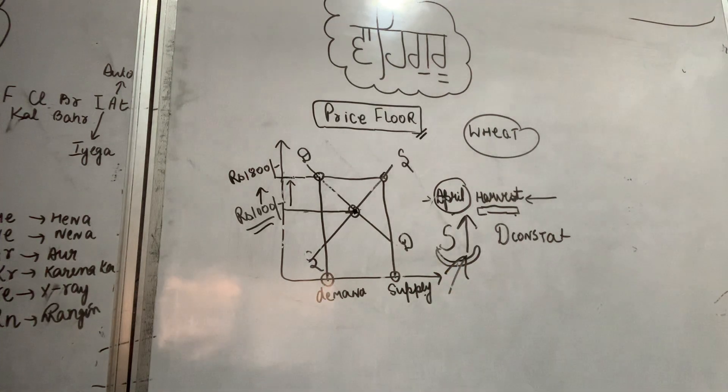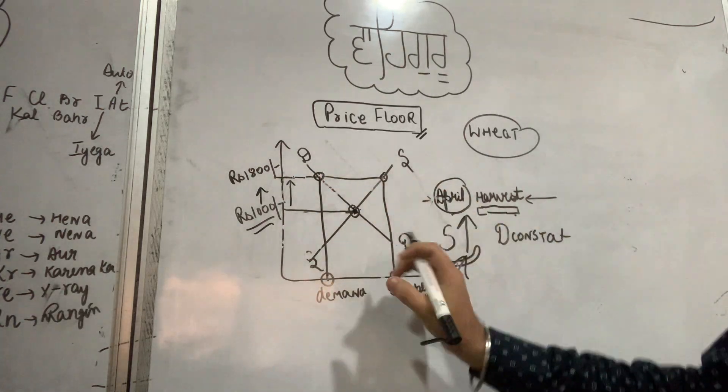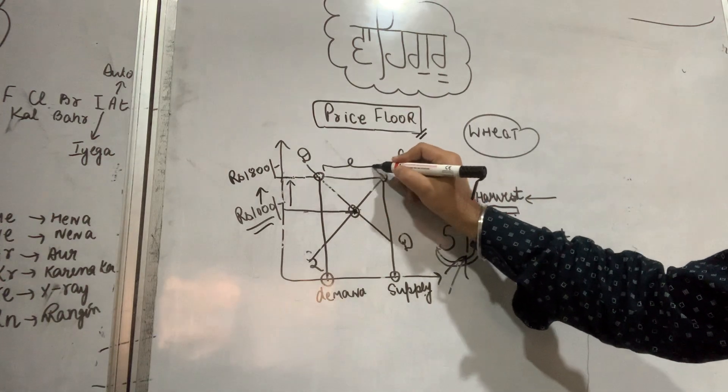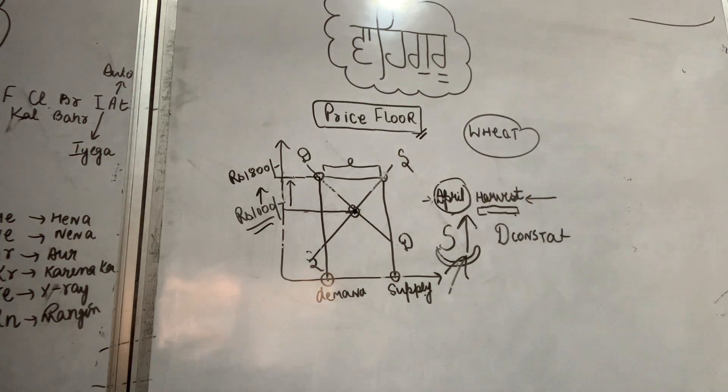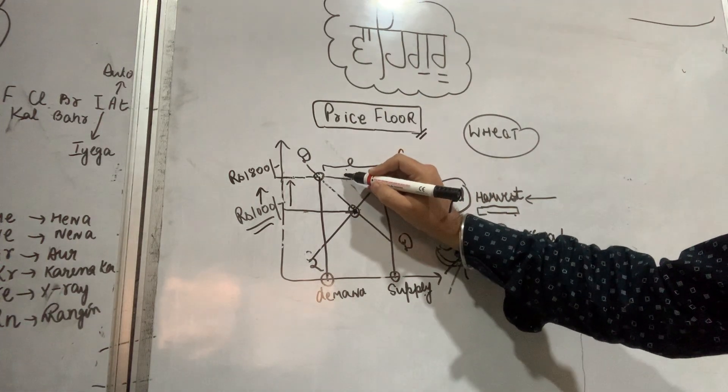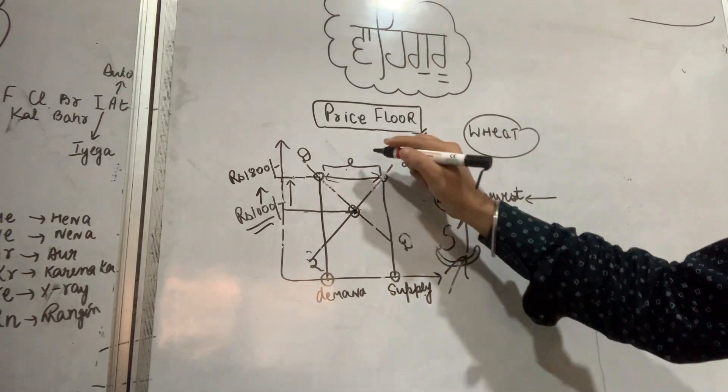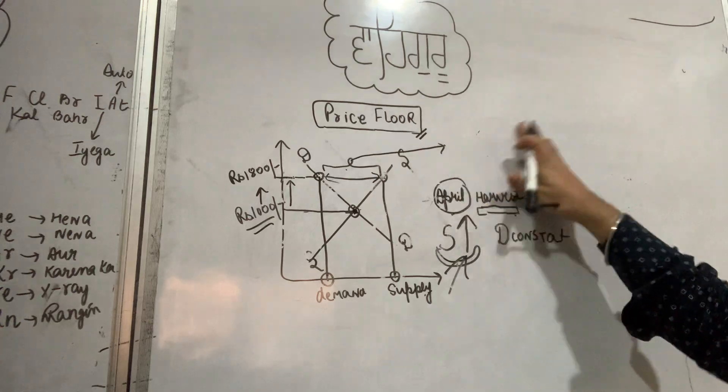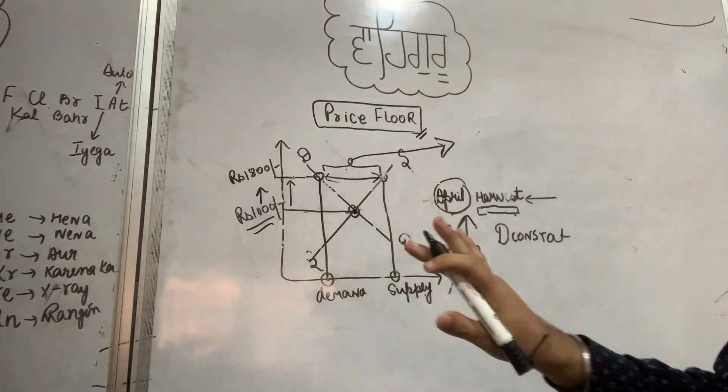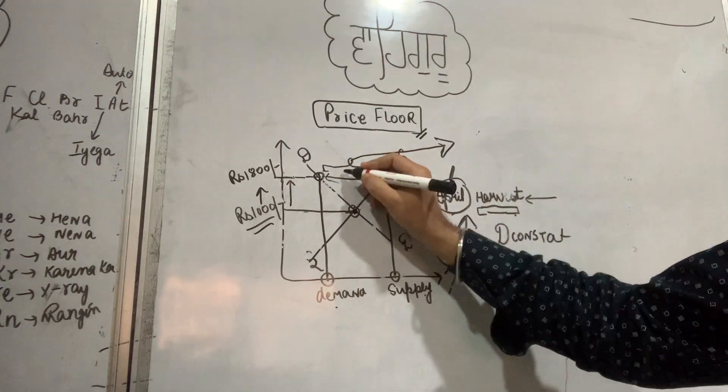So what happens now is, at 1800 rupees, demand is this much and supply is this much. The difference - demand is this much, supply is this much more. There's a gap between demand and supply. This gap, what does the government do with it? This excess supply gap, how does the government manage this gap? This gap between demand and supply - this gap.